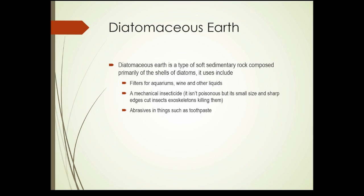What do we use diatoms for? Quite a lot, actually. Diatomaceous earth is a type of sedimentary rock made mostly from the silicon shells of diatoms. It has many uses for humans: filters for aquariums, wine, and other liquids; and as a mechanical insecticide. Think about this — a mechanical insecticide, as opposed to a poisonous one. Diatomaceous earth works because the sharp edges of the crushed silicon shells or frustules get picked up on insects.